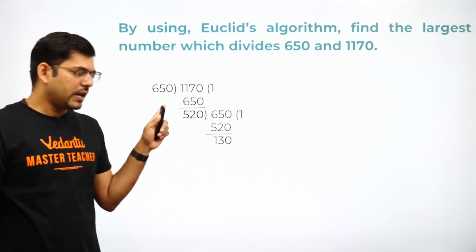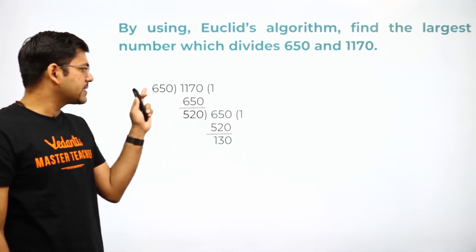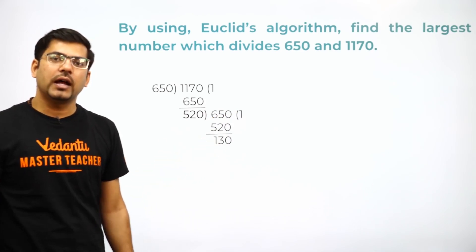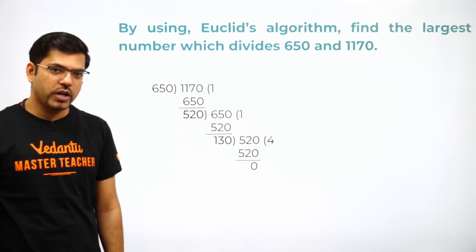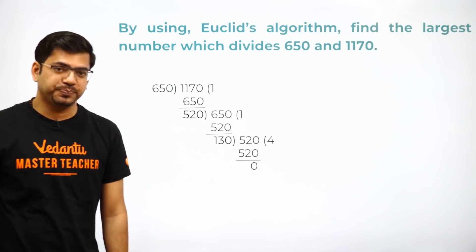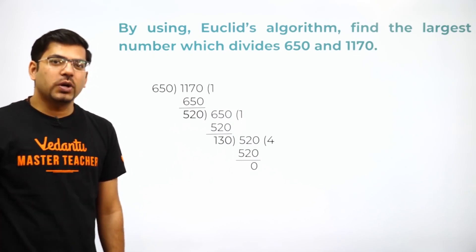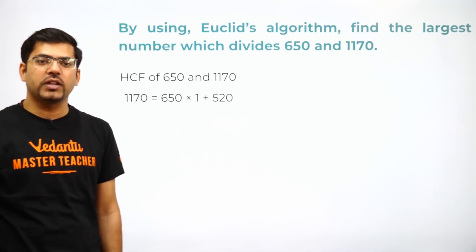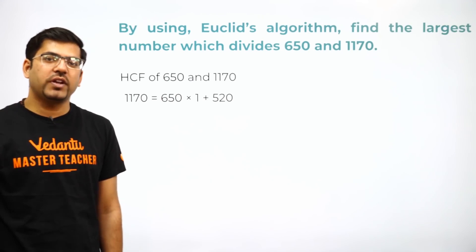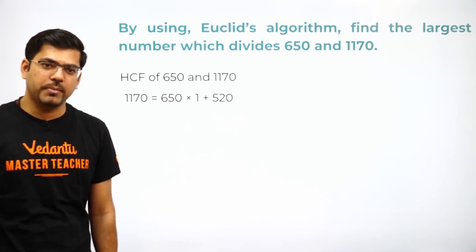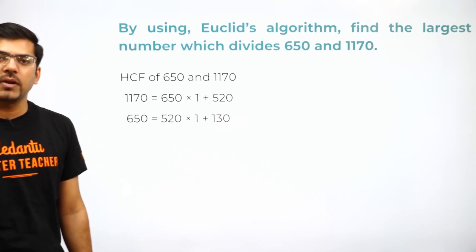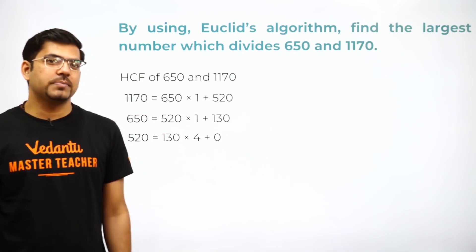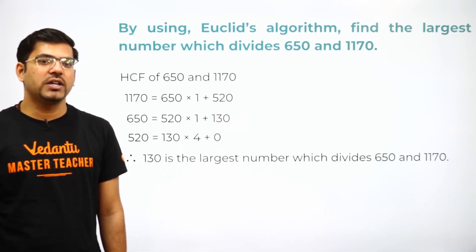The next division: 650 was the dividend and 520 was the remainder, so now 520 works as the new divisor and 650 as the new dividend. Dividing again: 650 = 520 × 1 + 130. Then 130 becomes the divisor and 520 the new dividend: 520 = 130 × 4 + 0. We have got zero. The three algorithm steps are: 1170 = 650 × 1 + 520; 650 = 520 × 1 + 130; 520 = 130 × 4 + 0.